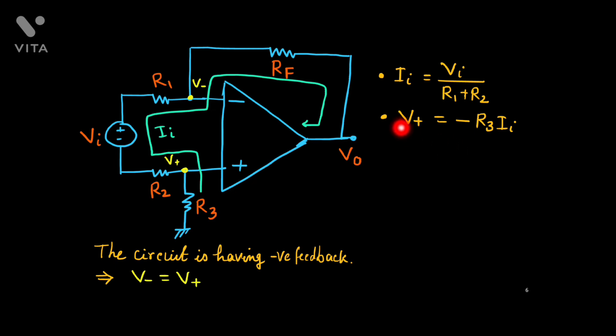Now, this one, V+, we can find out. This current is ii. So this terminal is zero. So this should be minus ii times R3. Because zero minus V+ upon R3 equal to ii.